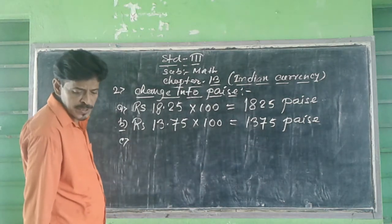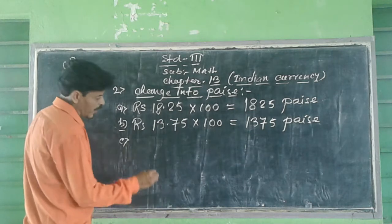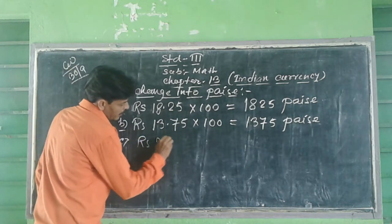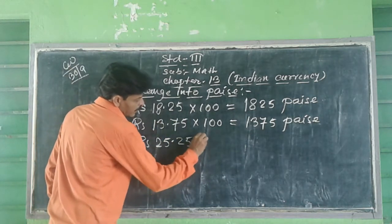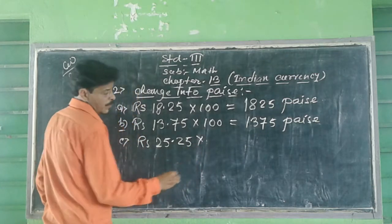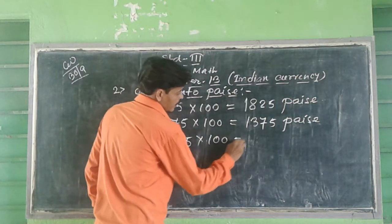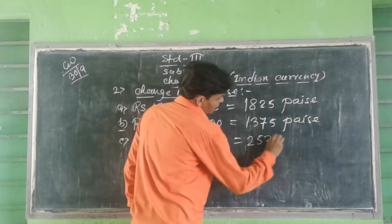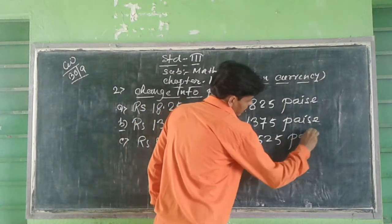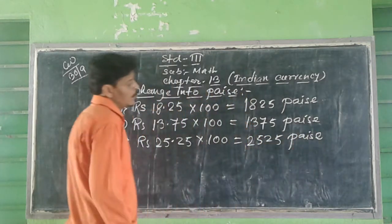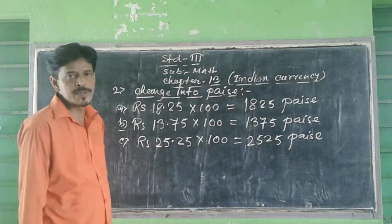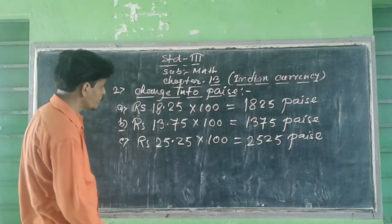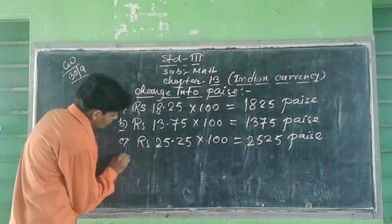Question 2c: Rupees 25.25. Rupees 25.25 into 100 equal to 2525 paise.